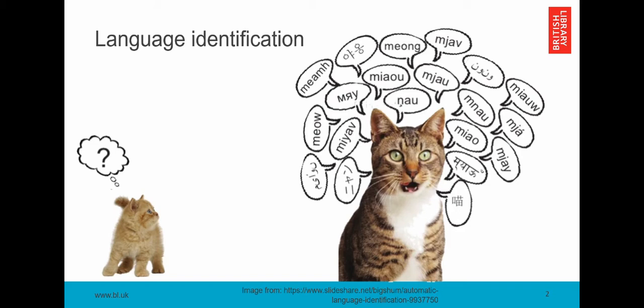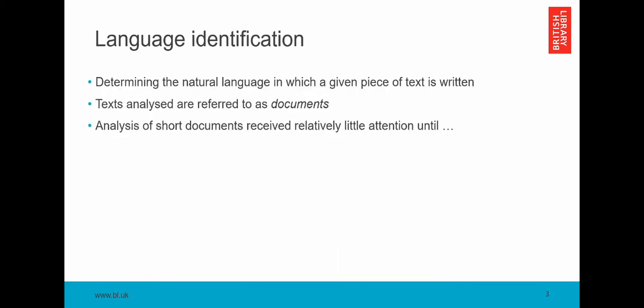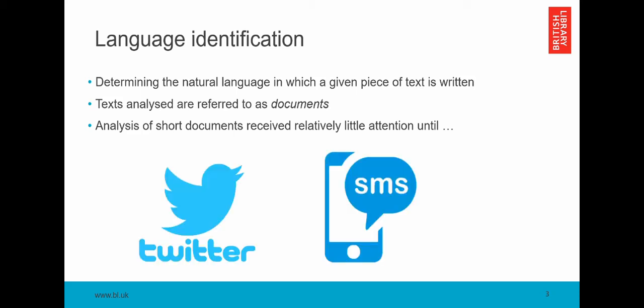So the first question to ask is what do we mean by language identification? Well, language identification and language detection are pretty much used synonymously and they just mean working out what language something is in. The texts that we analyze are typically referred to as documents. These may be written or spoken texts, although in this context I'm only going to focus on written texts. Throughout the history of language identification, it tends to be the case that the documents analyzed have been quite lengthy. So newspaper articles, whole books, Wikipedia articles, that sort of thing. But with the advent of newer technologies, including Twitter and text messaging, language identification has been applied to shorter texts, which will prove to be quite useful for our purposes.